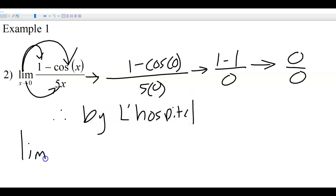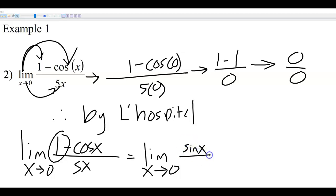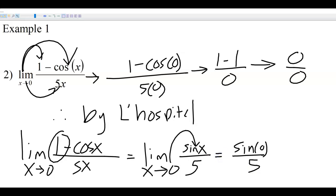Therefore, we apply L'Hôpital. The limit of our original function equals the limit of the derivative of the top and bottom. The derivative of the top: the 1 goes away, and the derivative of negative cosine gives a double negative, becoming positive sine. The derivative of the bottom is 5. Direct substitution gives sine of 0 over 5, and since there's a 5 in the bottom we're not indeterminate. We get 0 over 5, which is 0.